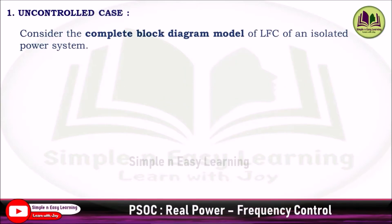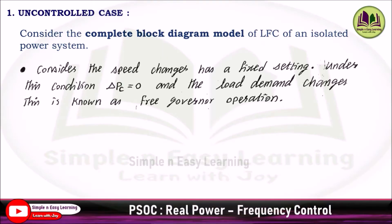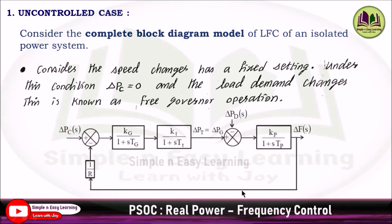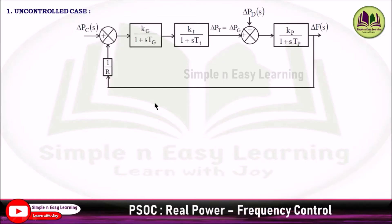For the uncontrolled case, consider the complete block diagram model of LFC of an isolated power system, which we derived already. The speed changer has a fixed setting, so ΔPC = 0 and the load demand changes. This is known as free governor operation — there is no change in the speed changer position.